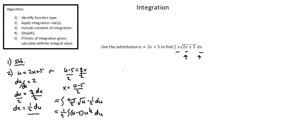Now I will distribute u to the power of 1 half. We have 1 fourth times the integral of: u times u to the power of 1 half is u to the power of 3 halves, minus 5 times u to the power of 1 half, with respect to u.